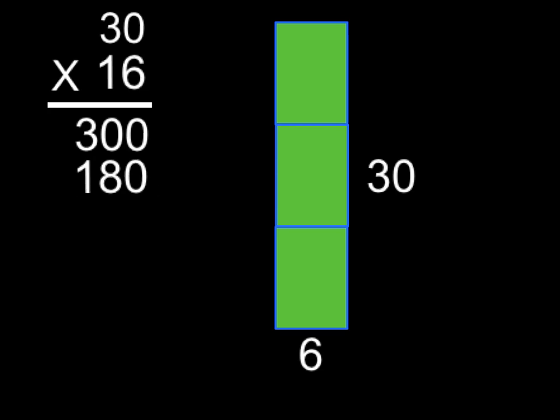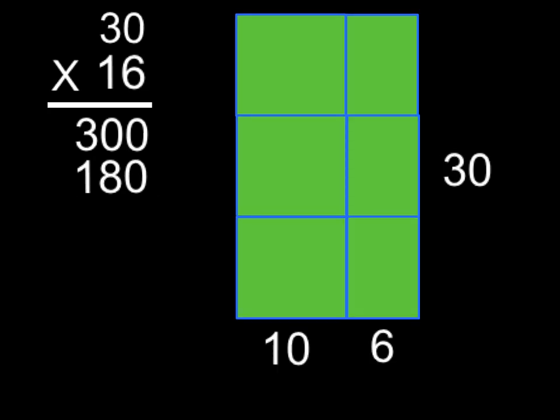We now have our two partial products: 300 and 180. Here's our 30 times 6. Here's our 30 times 10. We found those two partial products, and now that we have those two partial products, we're going to add them.